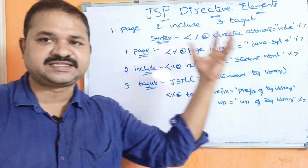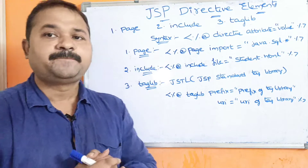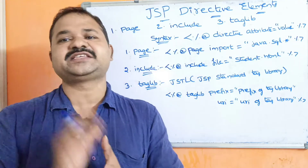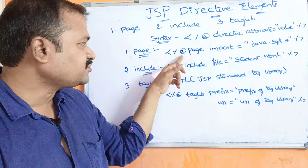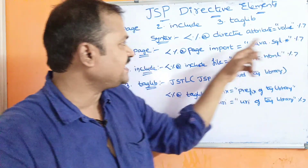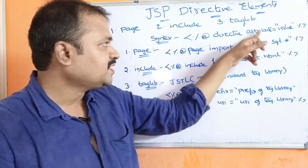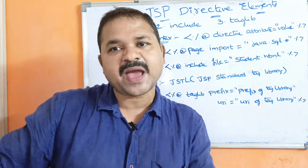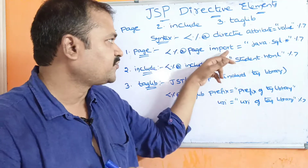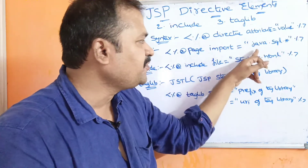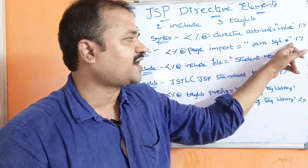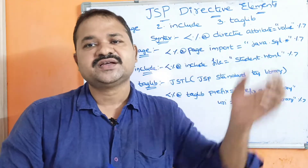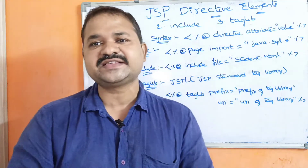The first one is page directive. Page directive is mainly useful in order to import a Java package in our JSP program. The directive is page, and the attribute is import. For example, import equals java.sql.* within double quotations — so that we can use the java.sql package's corresponding classes and interfaces in our program.